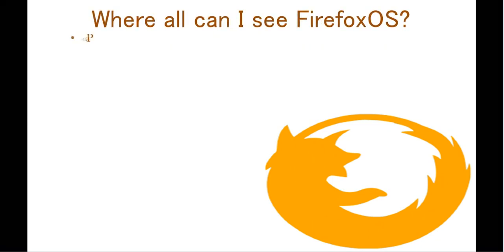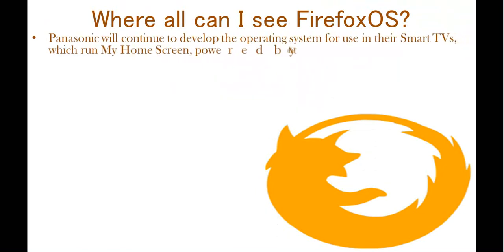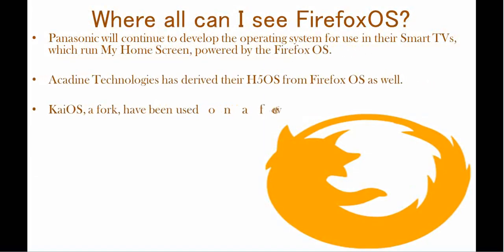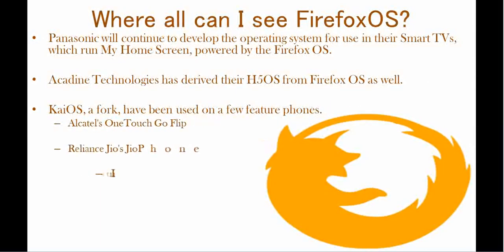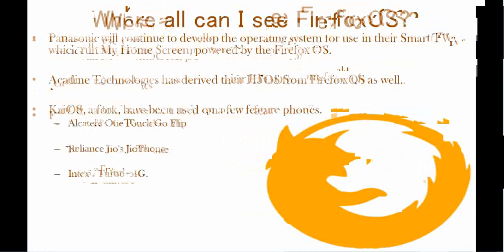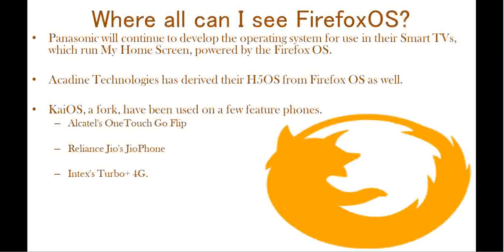Now let's see where we can find Firefox OS. Panasonic continues to develop the operating system for use in their smart TVs, which run My Home Screen, powered by Firefox OS. Card Line Technologies has derived the H5 OS from Firefox OS as well. KaiOS, a fork, has been used on a few feature phones — some to mention: Alcatel One Touch Go Flip, Reliance Jio Phone, and Intex Turbo Plus 4G.